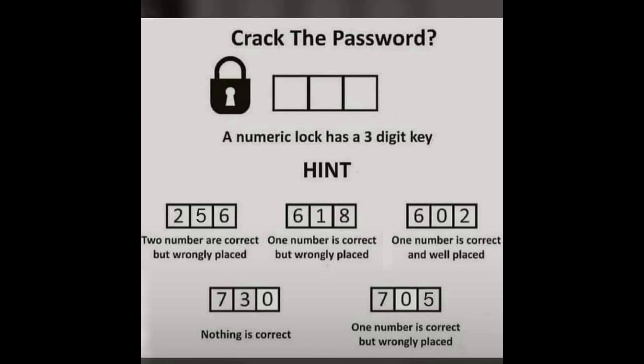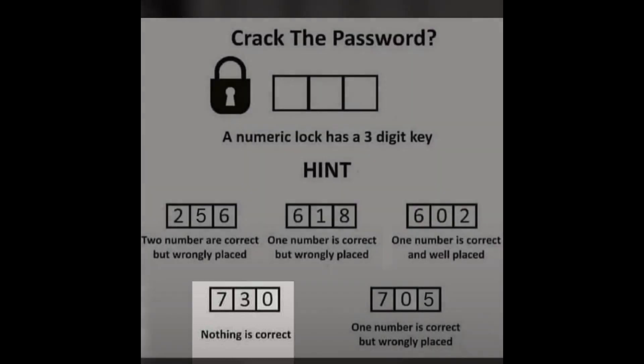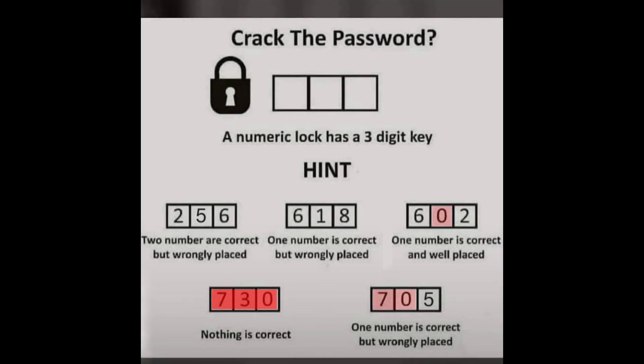Let's go with the easiest hint that says nothing is correct. This means all these numbers don't exist in our password, so let's go ahead and remove them from all our hints.